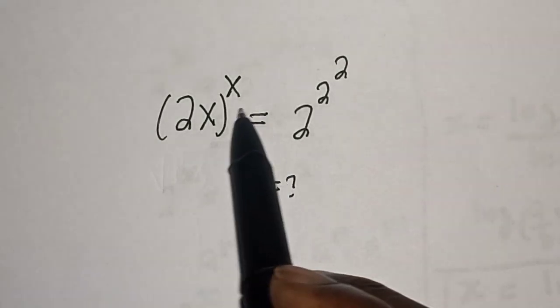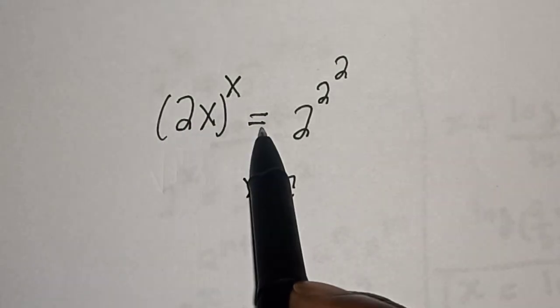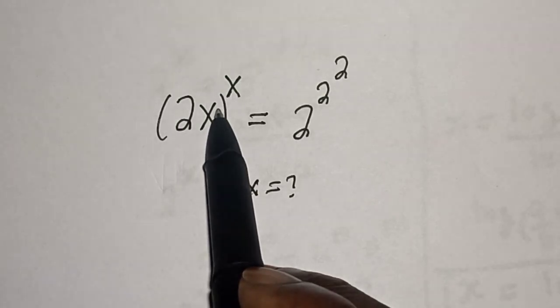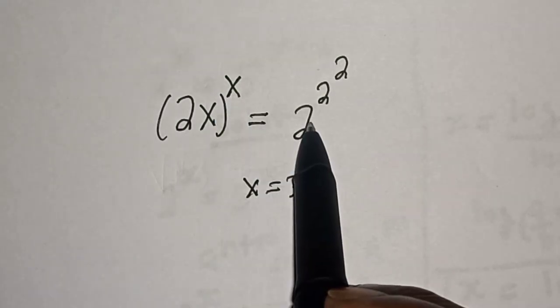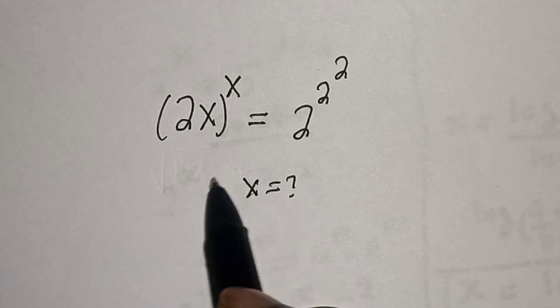Hello, welcome to Magic. In this class, we want to find the value of x from this equation: (2x)^x = 2^(2^2). Like, share, comment, and subscribe.